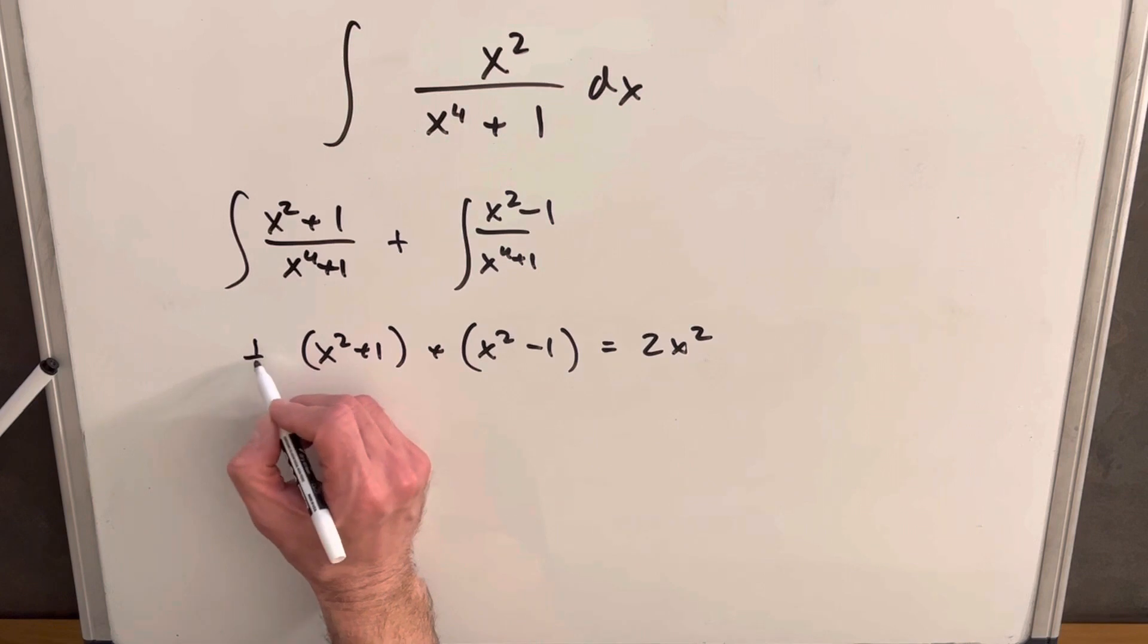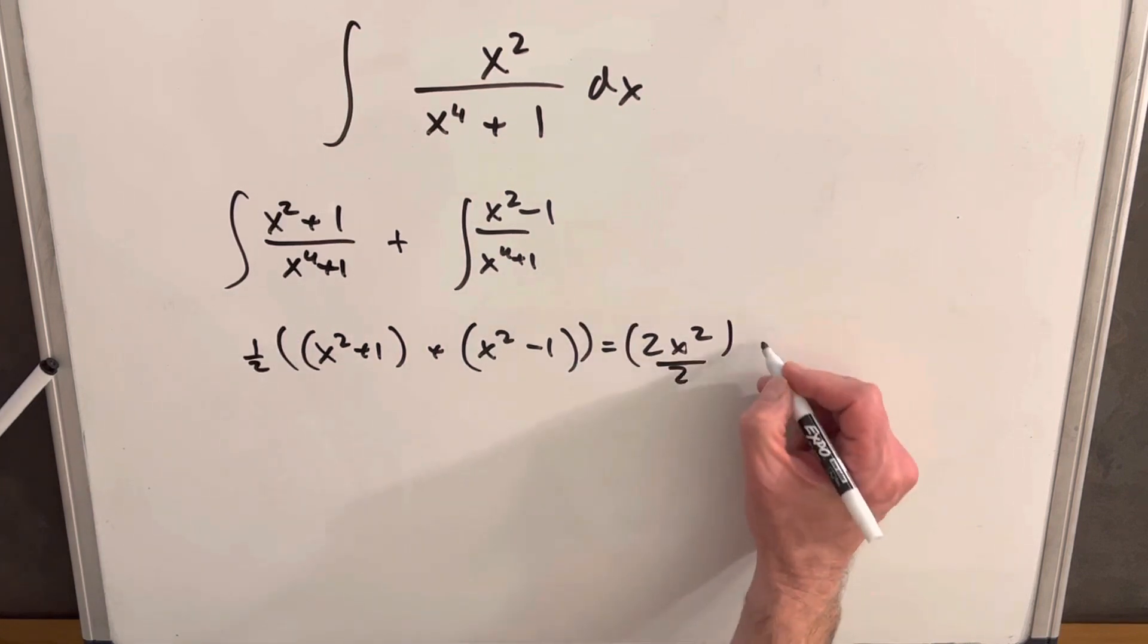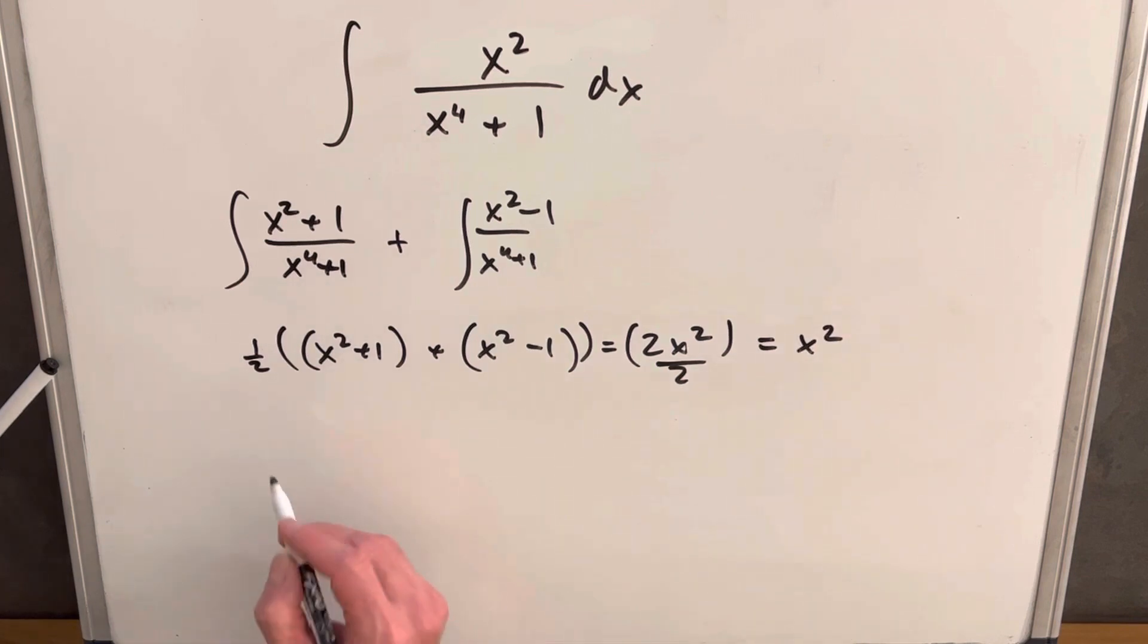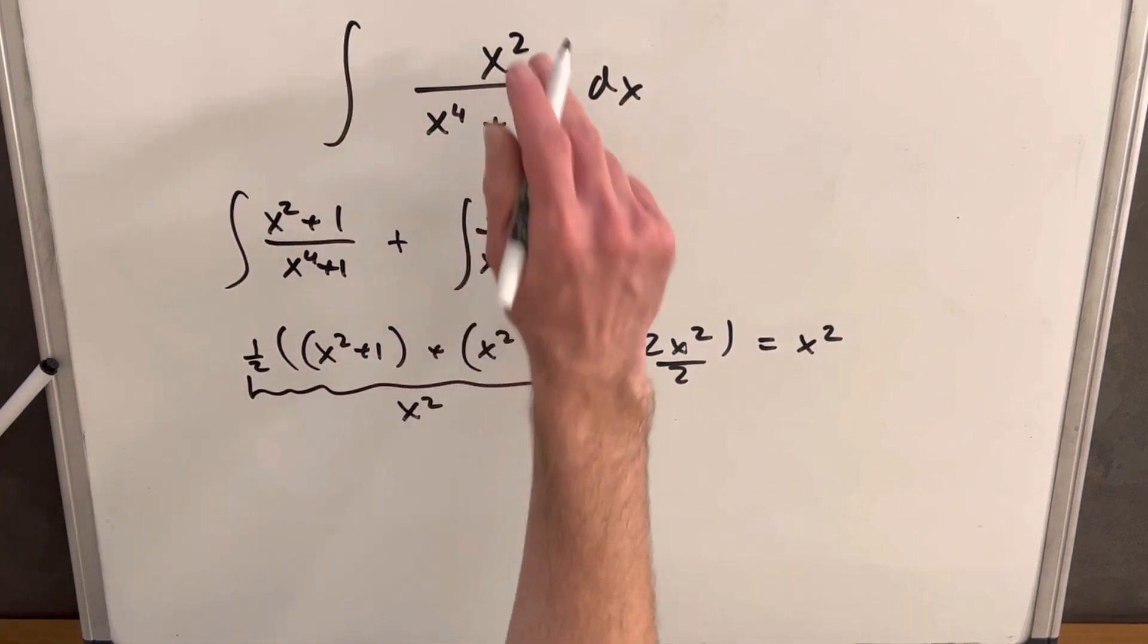That's close. All we need to do is multiply this by a 1 half, and we're left with x squared. So we can take this whole thing and replace our numerator.